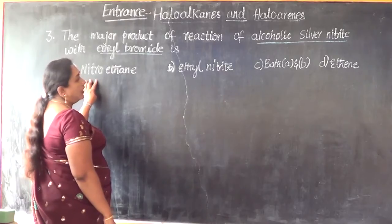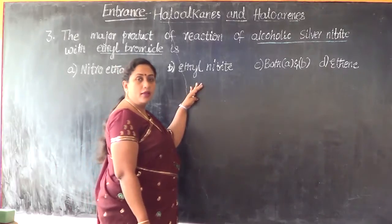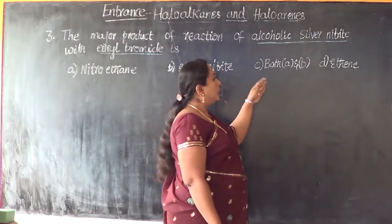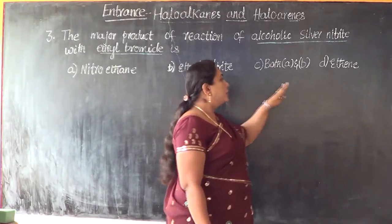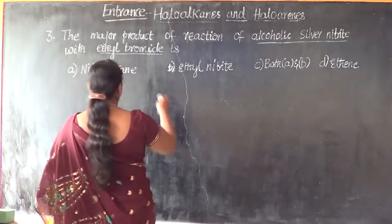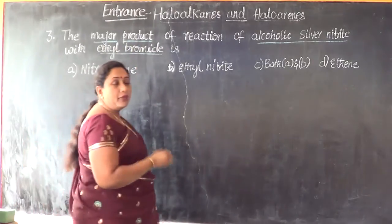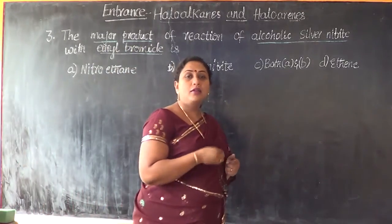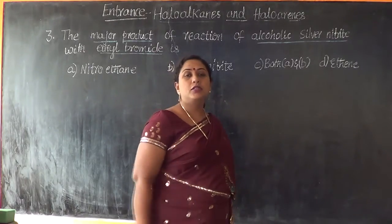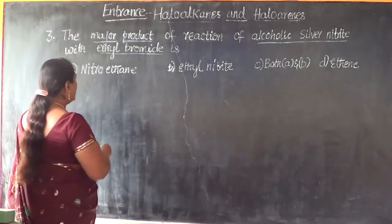Option A: is it nitroethane that we get as a product, or is it ethyl nitrite? That is option B. Option C says we get both A and B, and option D is ethyl. The point of focus here is major product — what do we mean by major product? It is that organic compound obtained in more or higher percentage, up to the tune of 75 to 80%. Let us write the reaction and see.